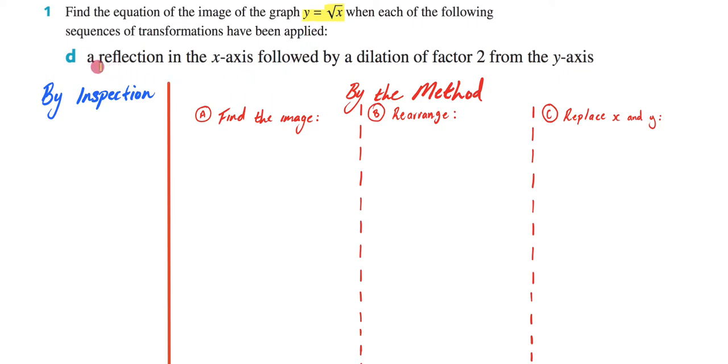And what we've been given is a reflection in the x-axis followed by a dilation of factor 2 from the y-axis. So there are two ways of approaching this. The first way is by inspection.